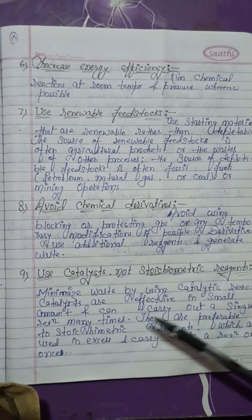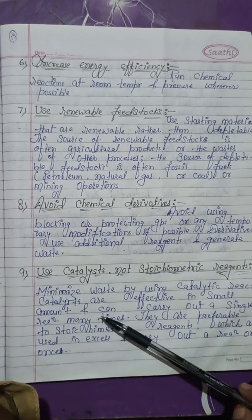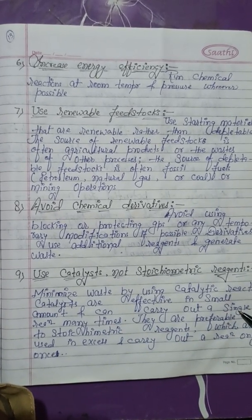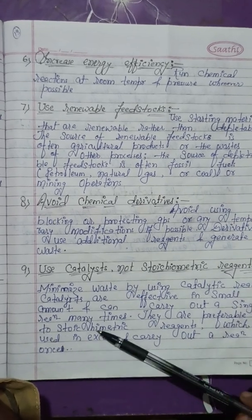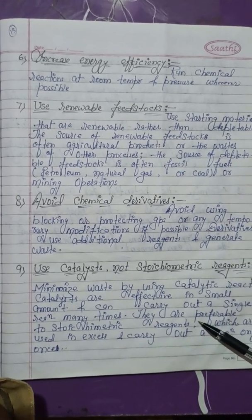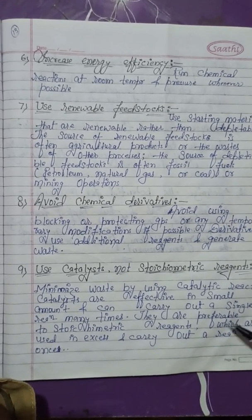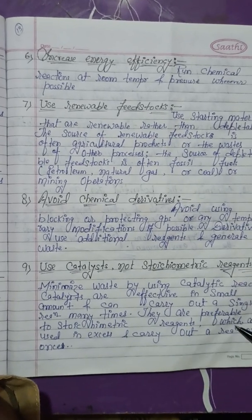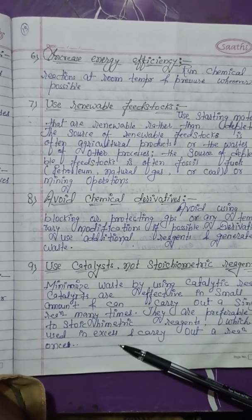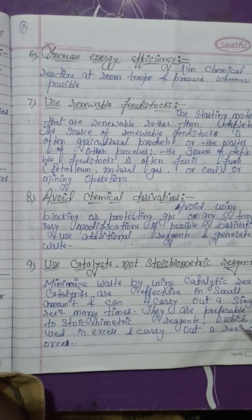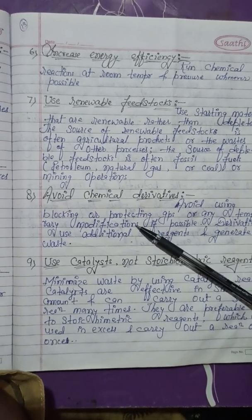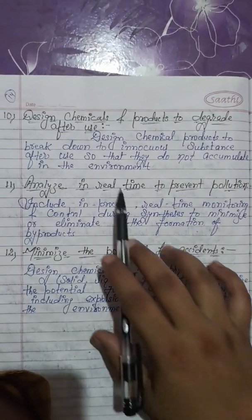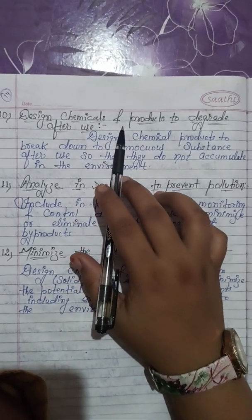Nine, use catalysis, not stoichiometric reagents: minimize waste by using catalytic reagents. Catalysts are effective in small amounts and can carry out a single reaction many times. They are preferable to stoichiometric reagents, which are used in excess and carry out a reaction only once.